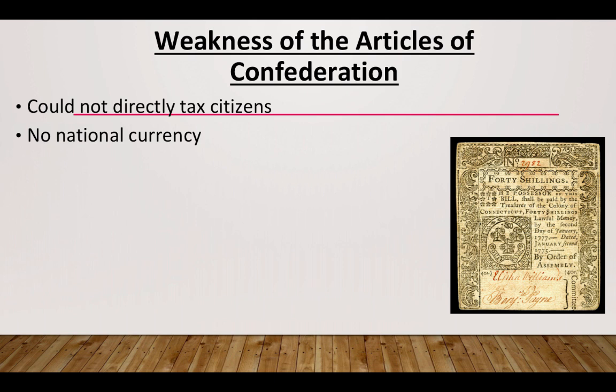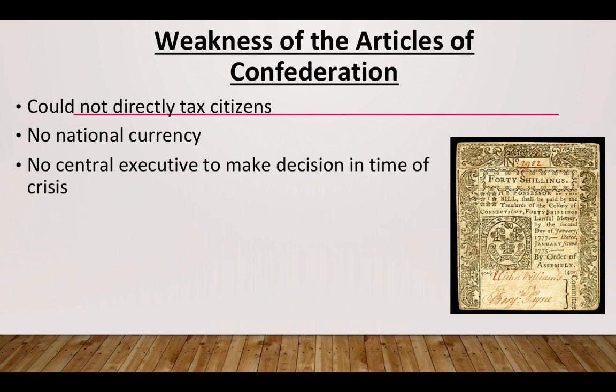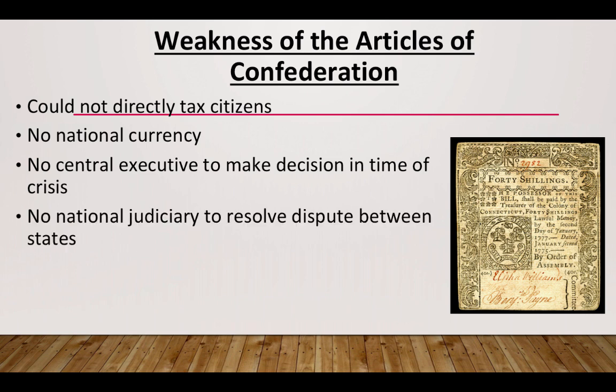There was also no national currency. We think of the dollar bill today as standard across all 50 states, but back then each state had its own currency and those currencies fluctuated, making trading very difficult. There was no central executive to make decisions in times of crisis — basically just a legislative branch and that was pretty much it.